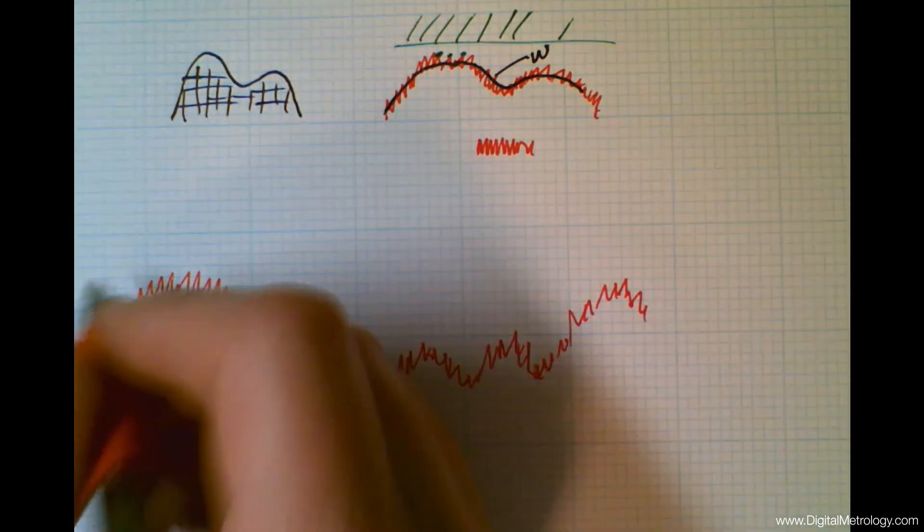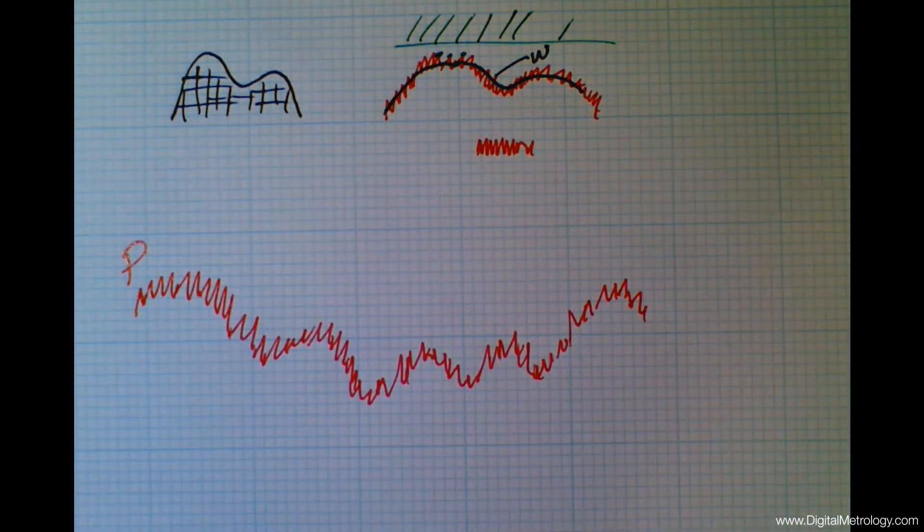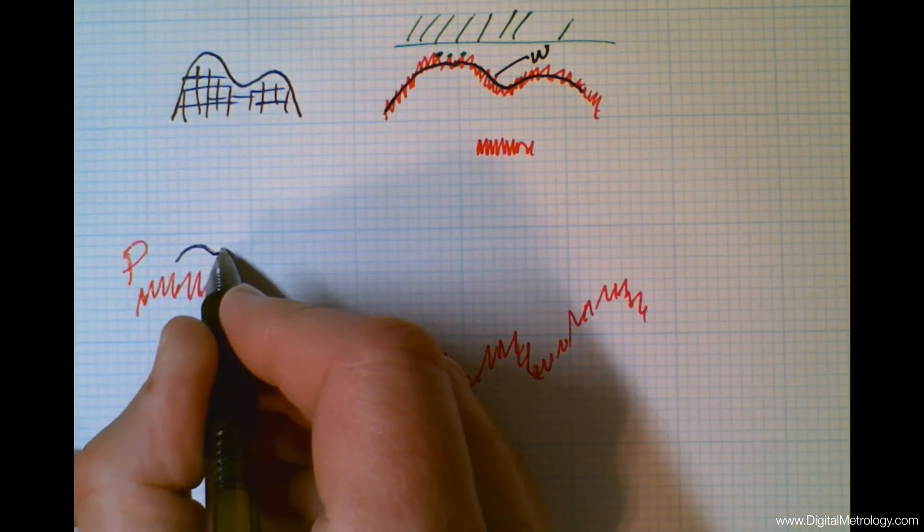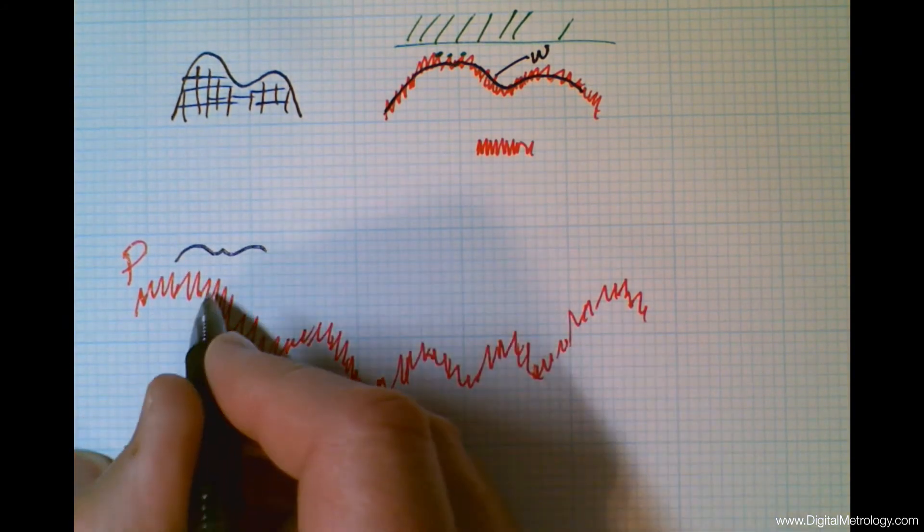So here's a surface. This will be a primary profile. It's leveled. It has a little bit of filtering applied and we want to understand or exploit the waviness so we can control it. The way we do this is to take a little chunk of data and plot the average.